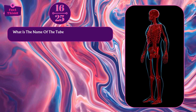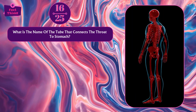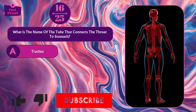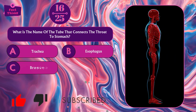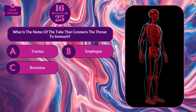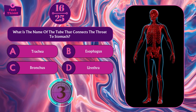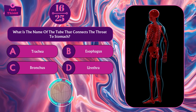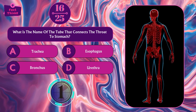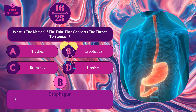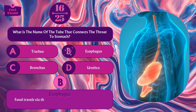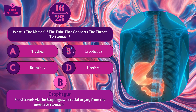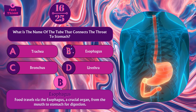What is the name of the tube that connects the throat to the stomach? Trachea, esophagus, bronchus, or urethra? Option B — esophagus. Food travels via the esophagus, a crucial organ connecting the mouth to the stomach for digestion.